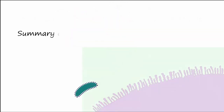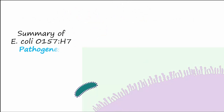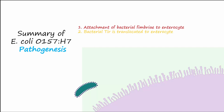Let's review the steps in the pathogenesis of E. coli O157:H7. Step 1: attachment of bacterial fimbriae to enterocyte. Step 2: bacterial TIR is translocated to enterocyte. Step 3: binding of TIR to intimin.